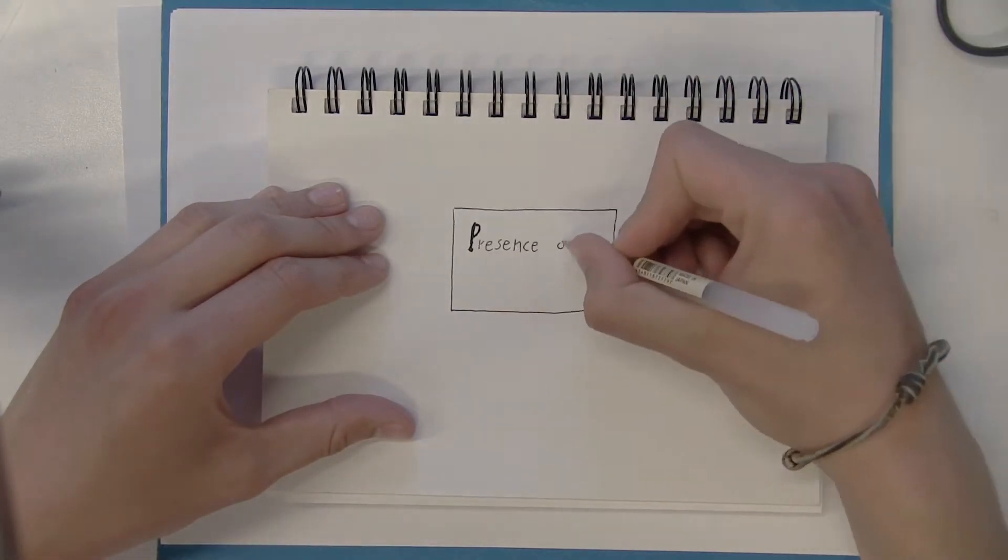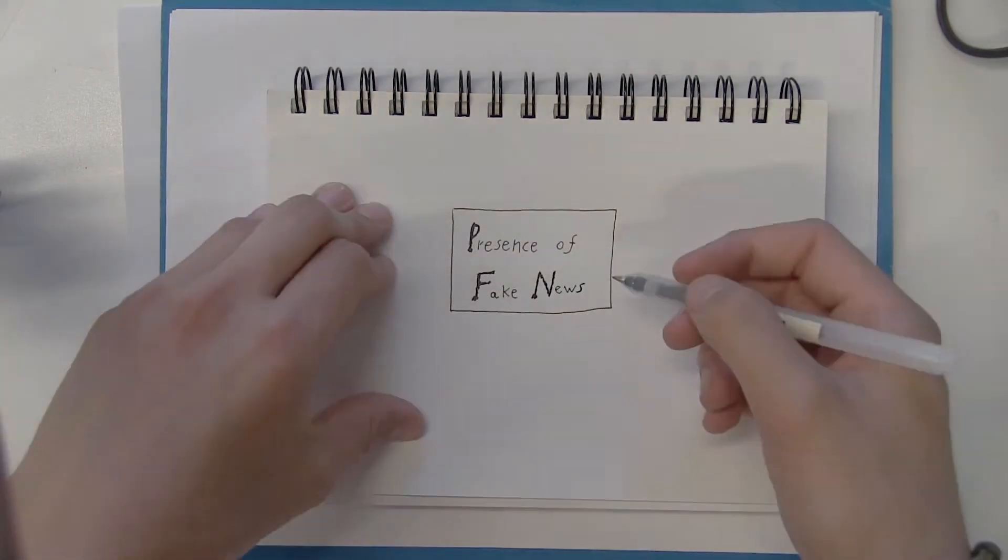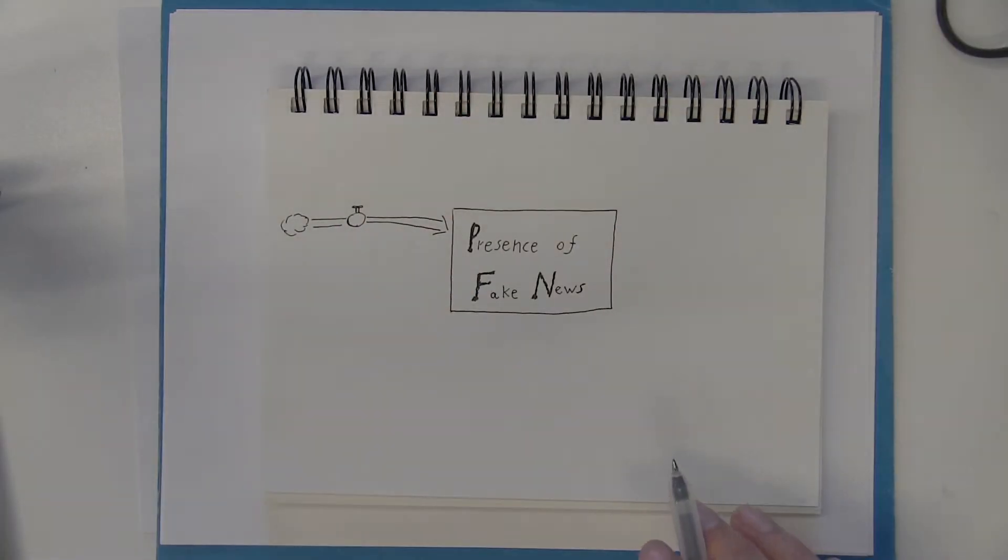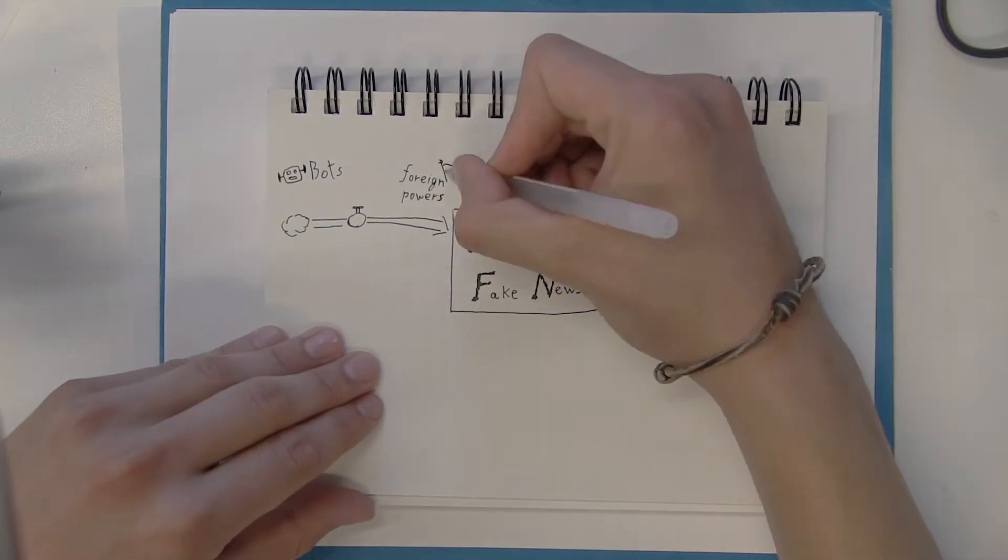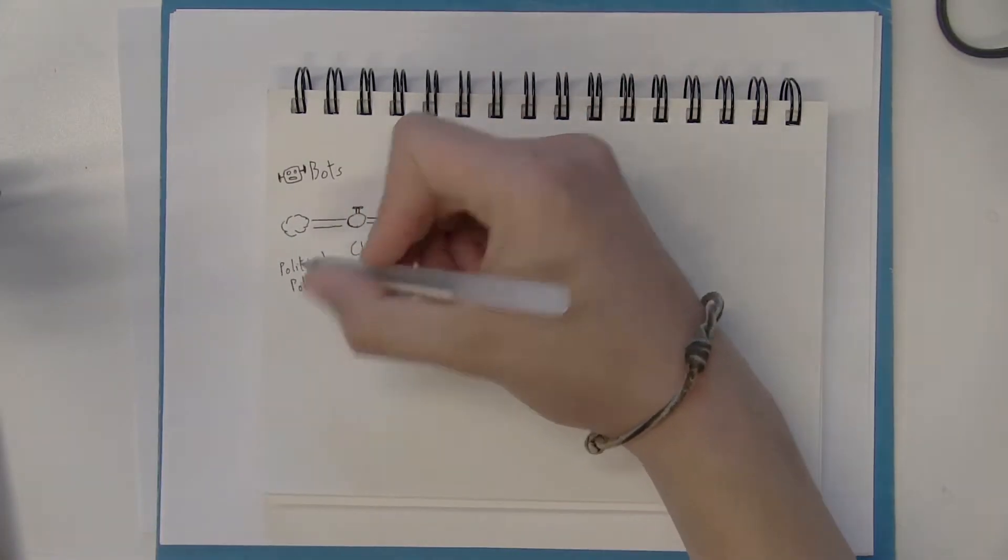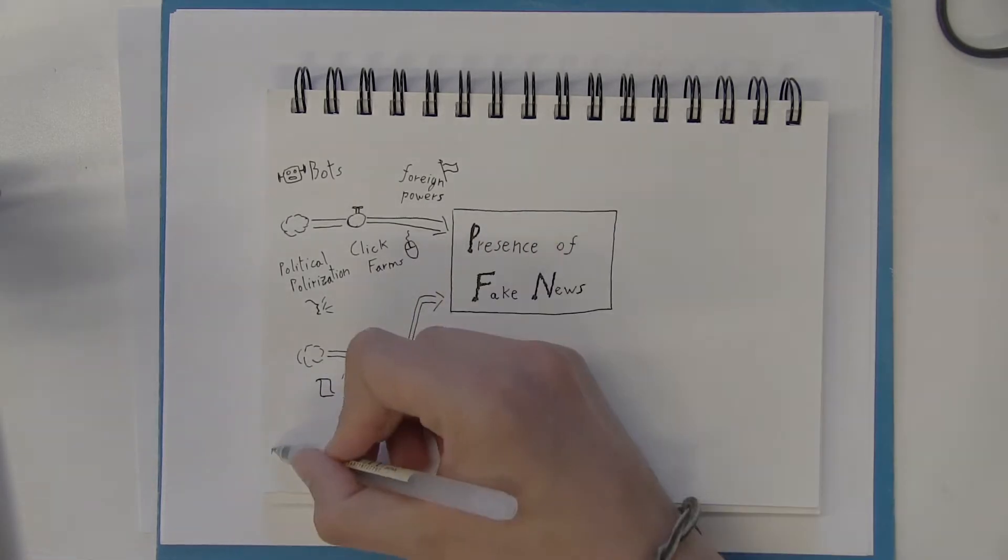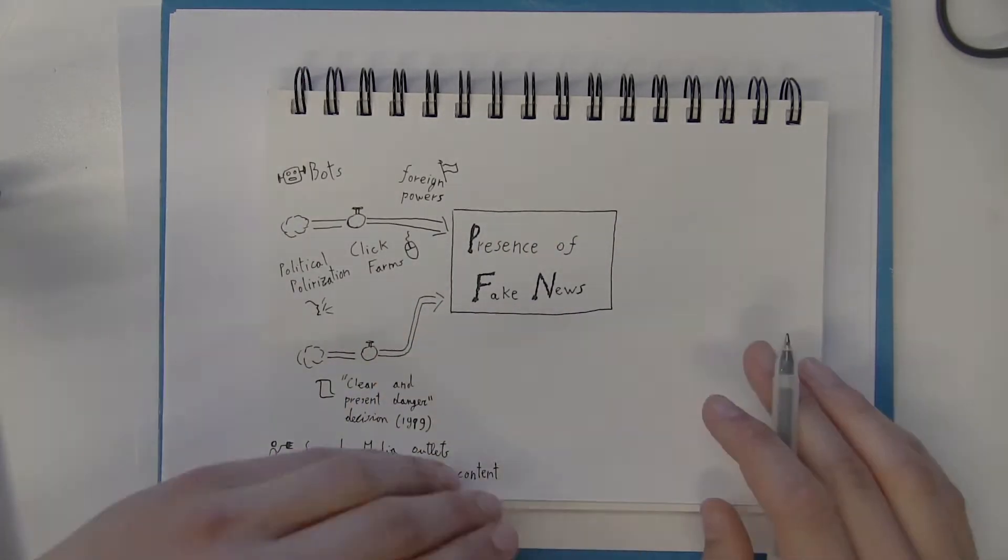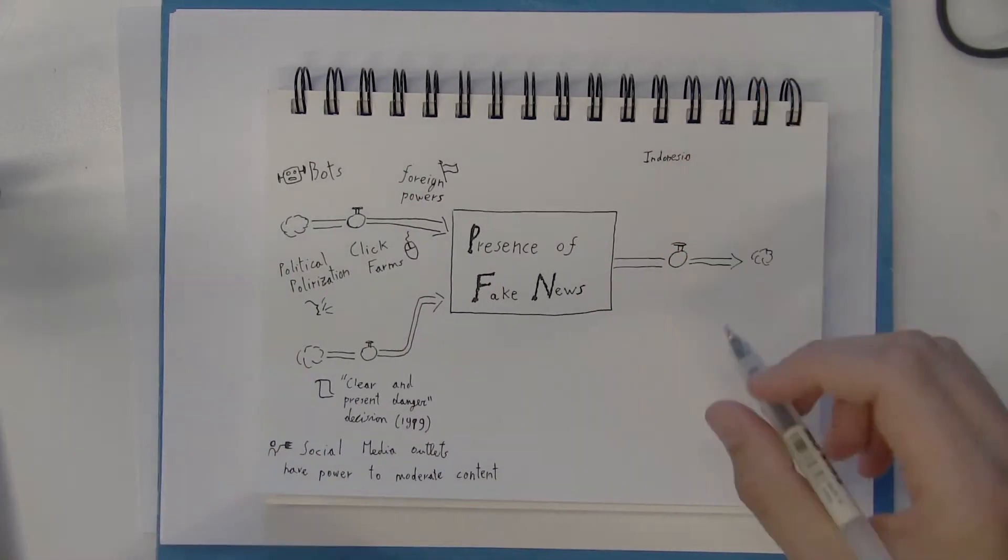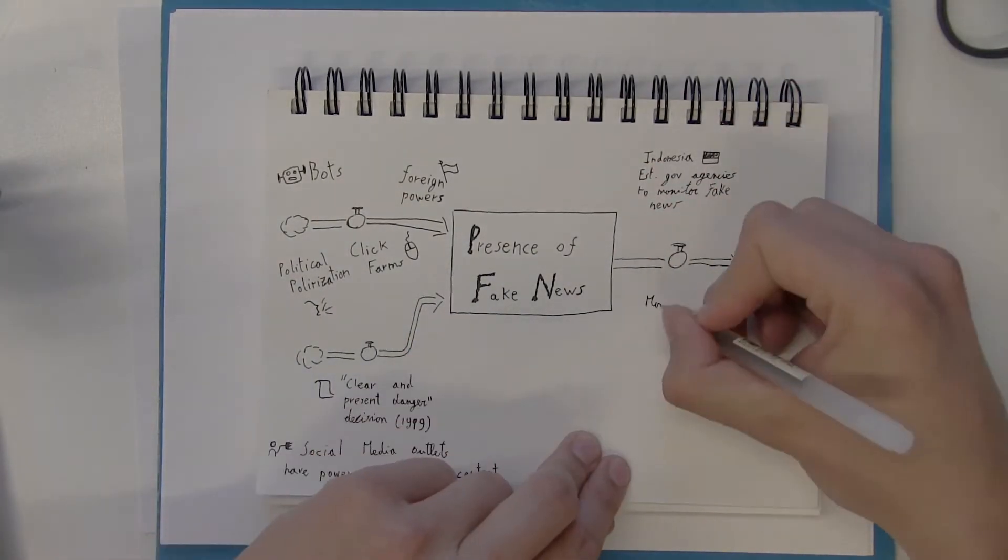Fake news is nothing new. It was around centuries ago, and still today it plagues the public with misinformation about critical current events. Its presence is due to malicious authors, foreign powers, and bots who attempt to sway public opinion, and we can combat the creation of fake news through the rationality of our minds, fake news detecting algorithms, and the support of independent professional journalism.